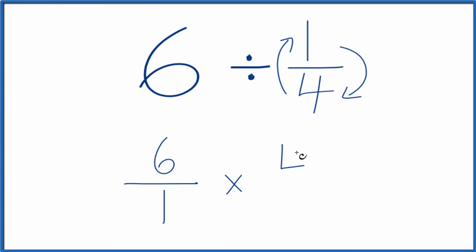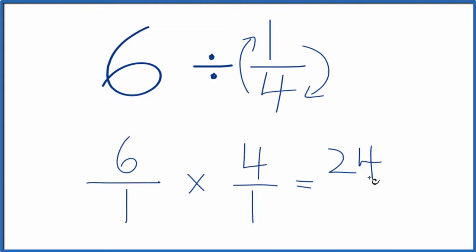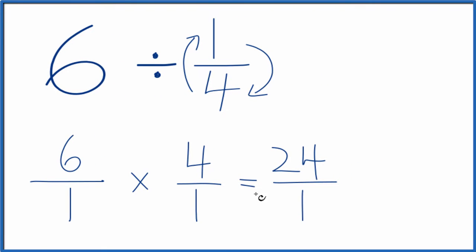Six over one times four over one. Now we can just multiply. Six times four, that equals 24. And one times one, that equals one. We end up with 24 over one, and that's the same thing as 24.